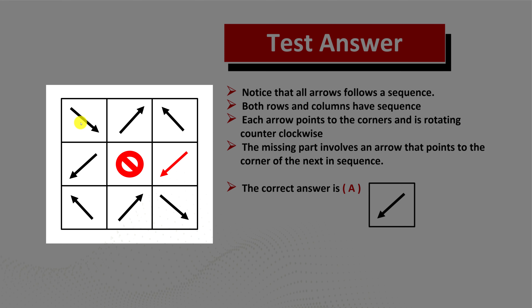As you can see, both rows and columns have a sequence. If you look at the bottom row, you see that the arrow points in the bottom-right corner, then in the upper-right corner, then in the upper-left corner — it rotates counterclockwise. You see that the arrow goes from pointing to the upper-left corner, then to the upper-right corner, and then to the bottom-right corner, rotating clockwise. The missing piece in the middle is designed to confuse you — it shows there is no sequence in the middle row.